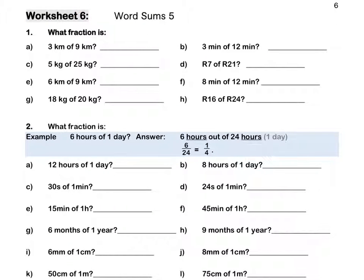Worksheet 6. What fraction is 3 kilometres of 9 kilometres? It's 3 out of 9, which in simplest form is one third.